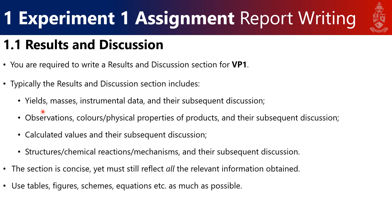First, if you have things like yields, masses, instrumental data, and observations of colors or physical properties of your products — this is very applicable to Experiment 1. For example, you would say the potassium permanganate was purple, and the subsequent discussion is: why was it purple? Because manganese in the plus seven oxidation state is expected to be purple. That's how you link the observation to its chemical significance.